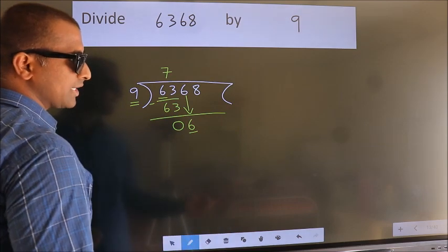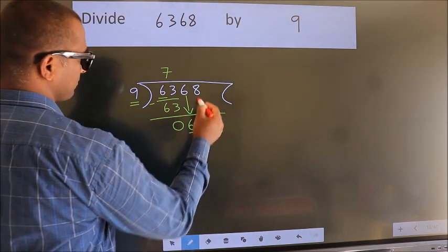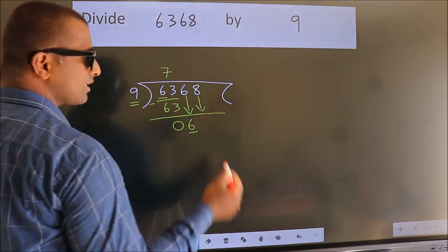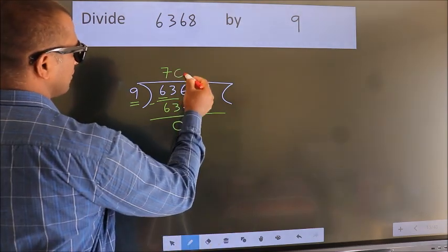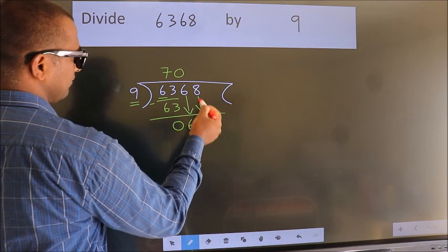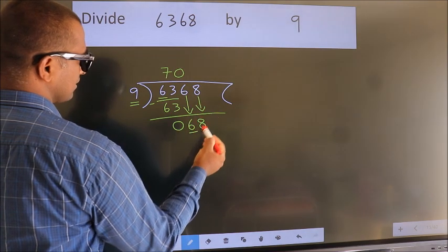So, we should bring down the second number. And the rule to bring down second number is, put 0 here. Then only we can bring down this number.